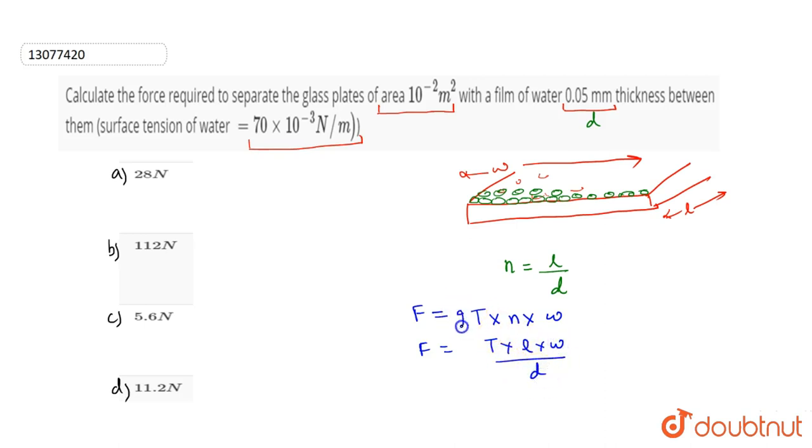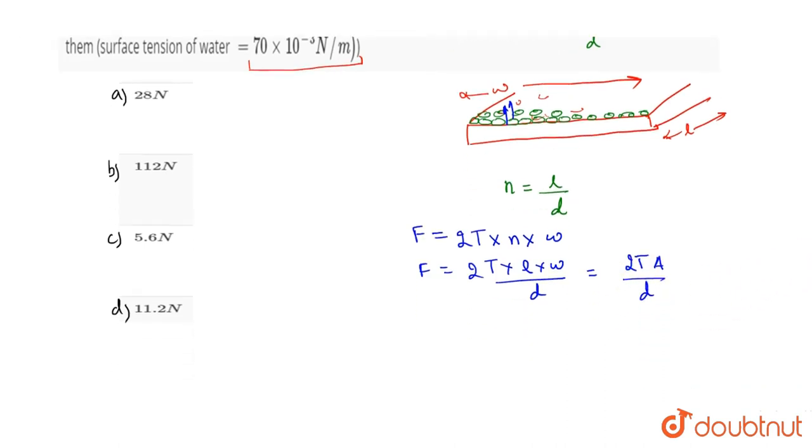Here we have two of them because every molecule has two sides. So F equals 2T, times the area of the plate, divided by D, which is the thickness of film. Now if we put in the values,